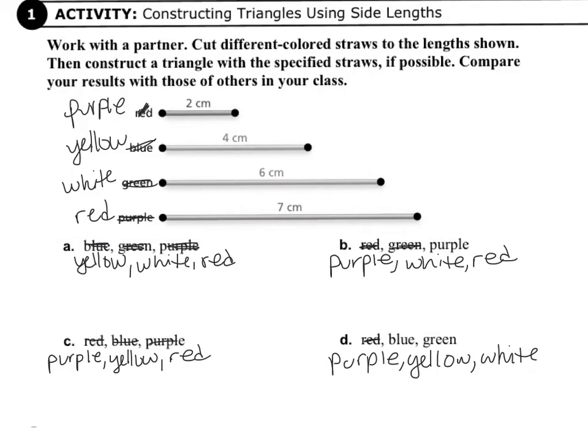And in this flipped lesson, we are going to do activities A and C. So for activity A, we're going to be using the yellow, white, and red pipe cleaners. And for activity C, we're going to be using the purple, yellow, and red pipe cleaners.